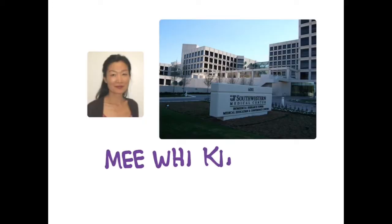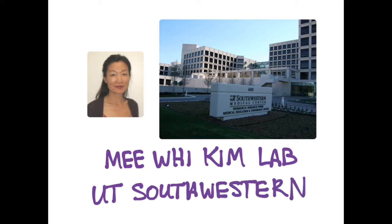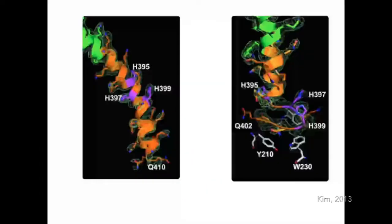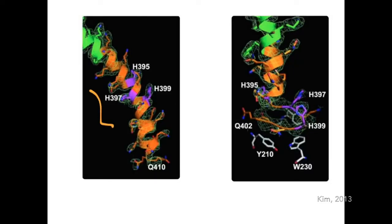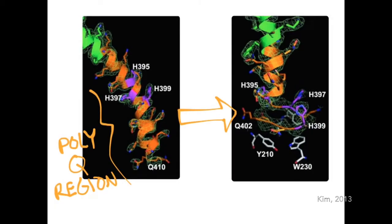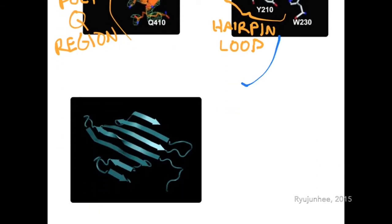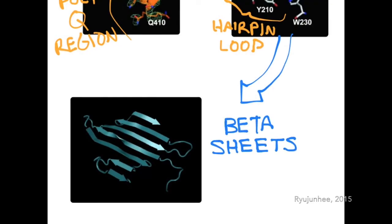Much of what we know regarding secondary and tertiary Huntington structure has come from Mi-Wey Kim's lab at the University of Texas. In 2013, Kim's lab used crystallization techniques to demonstrate that in mutant Huntington, the polyglutamine region can easily change from an alpha helix into a beta-hairpin loop. These hairpin regions may be nucleation sites for the formation of beta sheets, which encourage aggregate formation that is toxic to the cell.